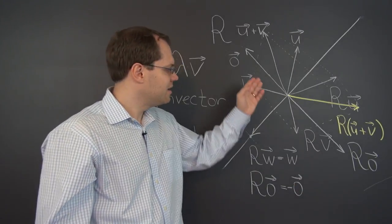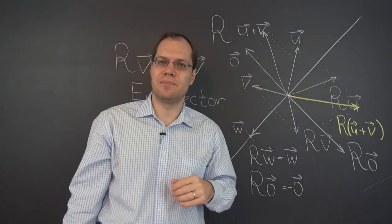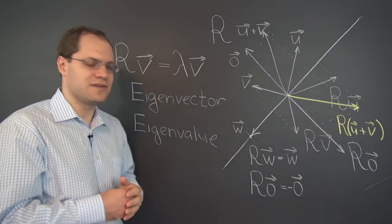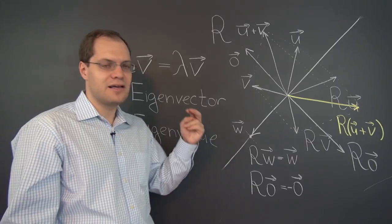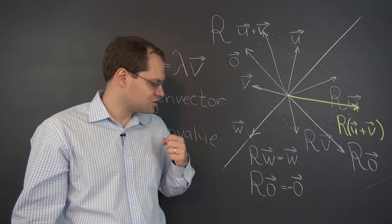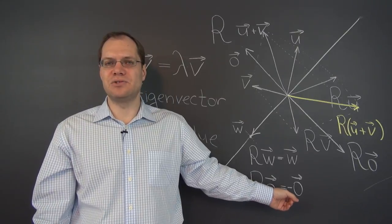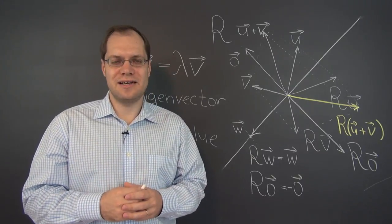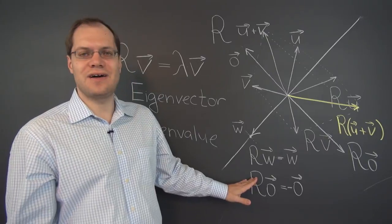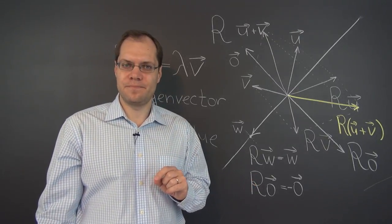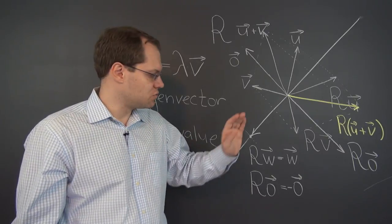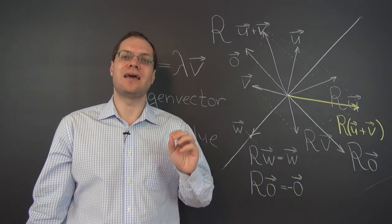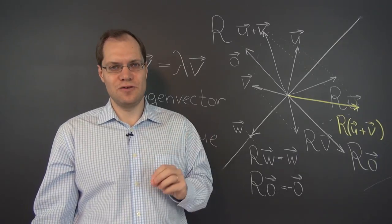There isn't another distinct eigenvector direction — any other vector clearly changes the line it lies on under reflection. So reflection with respect to a line has two eigenvalues: one and minus one, with two corresponding eigenvectors. Now, I'll show you an algebraic equation related to this transformation whose roots are, as if by magic, one and negative one — a very nice mystery to be solved a little later.